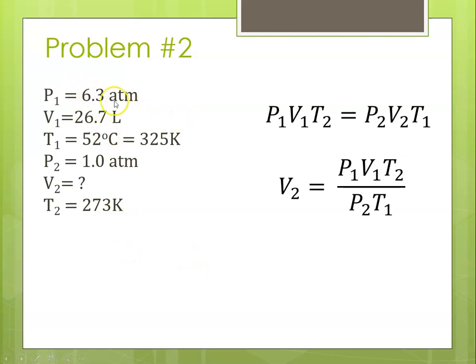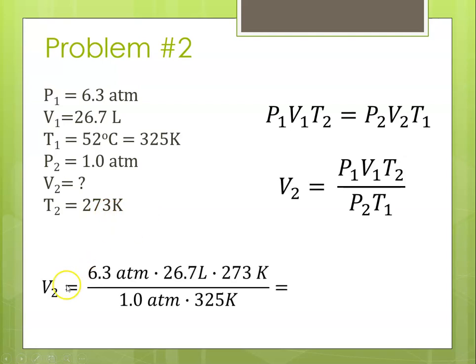Can't state enough times, be careful plugging the numbers in so that you get them in the right location. So our V2, our new volume, will be our P1, which was 6.3 atmospheres, times our V1, which was 26.7 liters, times our T2, which was 273 Kelvin, divided by our P2, which was 1 atm, and our T1, which was 325 Kelvin.